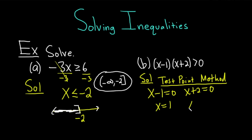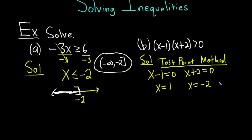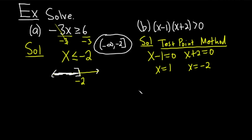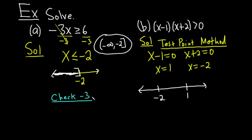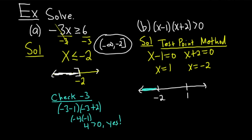You solve for x, getting x equals 1 and x equals negative 2. Then you put your answers on a number line — so we have negative 2 and 1. Now you pick a number in each interval. Let's pick negative 3, which is less than negative 2. Plugging negative 3 into the inequality: negative 3 minus 1 times negative 3 plus 2 gives negative 4 times negative 1, which is 4. Is that greater than 0? Yes, it is — so we shade this interval.